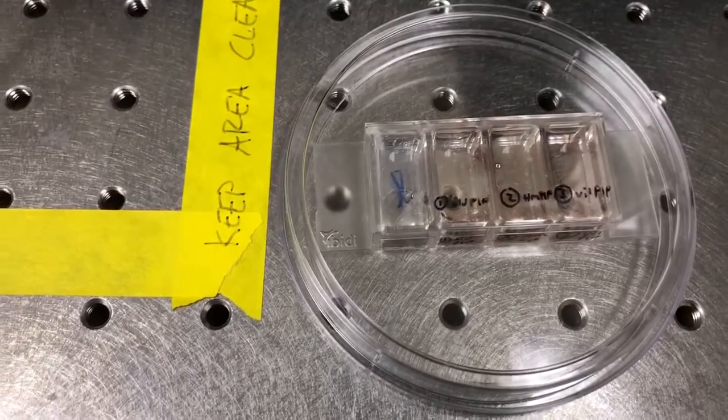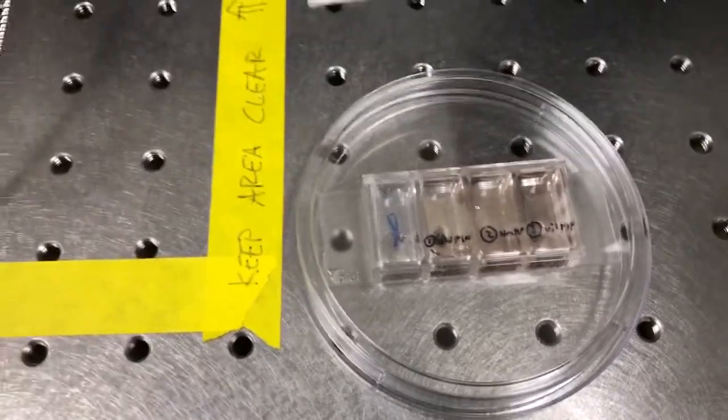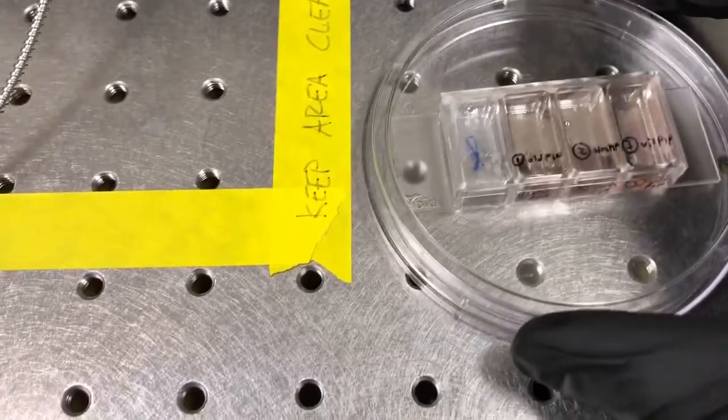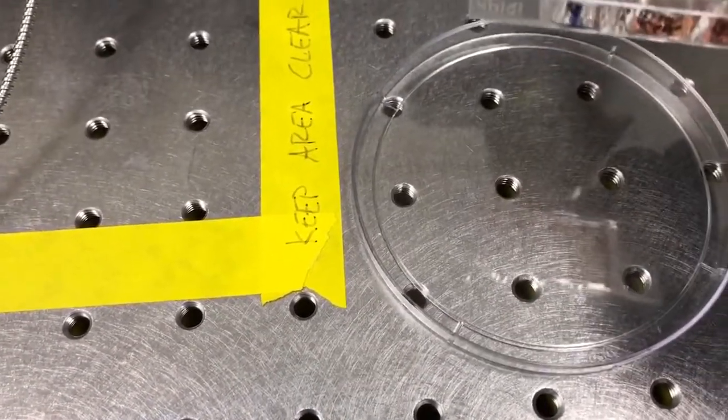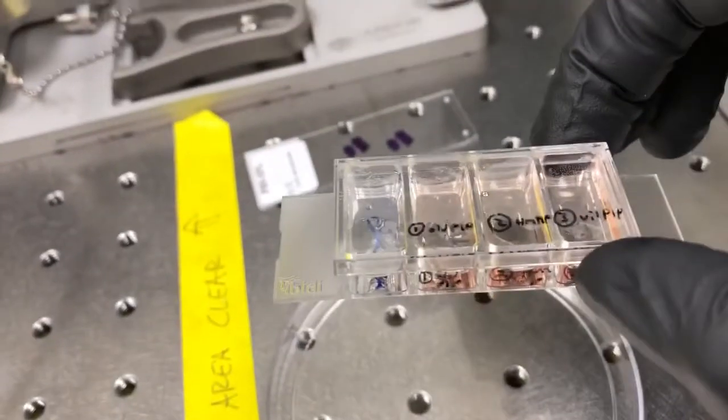What we have here is a sample that's in a BD slide. This is a special kind of sample holder where the bottom is very thin plastic. It has optical properties very similar to covered glass.